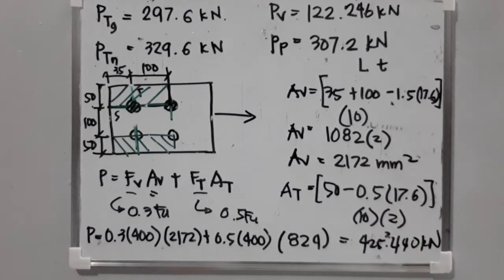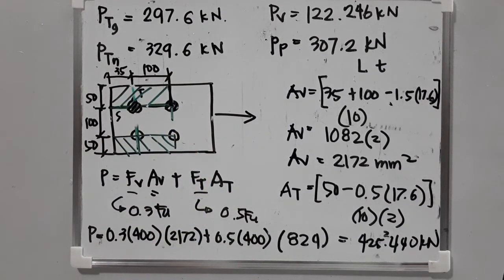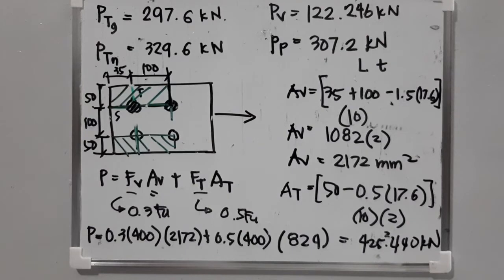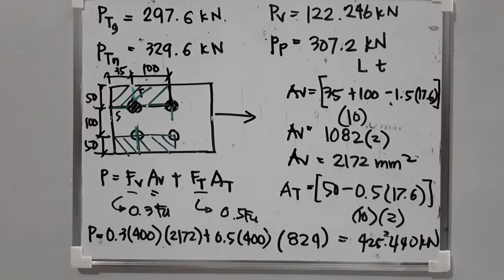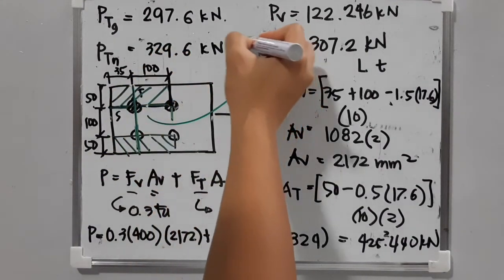P for block shear equals 425.440 kN. You can try another path of pure tearing: 50 plus 100 plus 50 equals 200, minus 2 holes times 17.6, times thickness 10, giving a total area of 1,648. With allowable stress of 0.5 times 400, this gives 329.6 kN — which is actually the same as the tension on net area value.